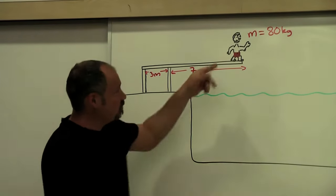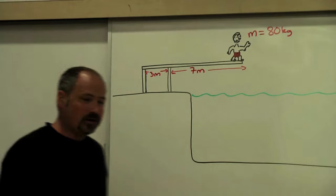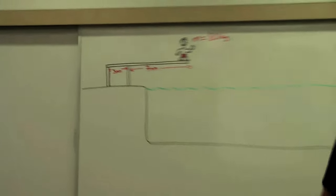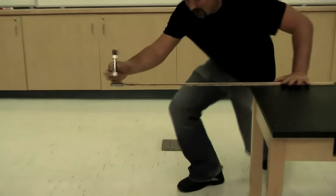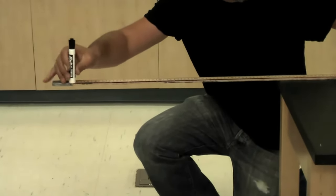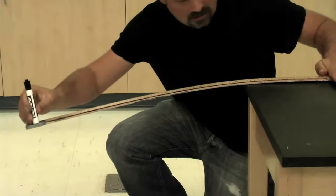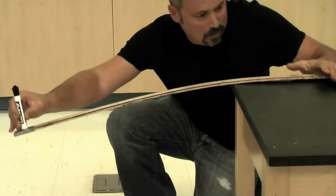But when he jumps off the diving board what are these forces? Let's take a look here. Here's a makeshift diving board, here's our man. When he jumps down you can see that it bows up here where my thumbs point.